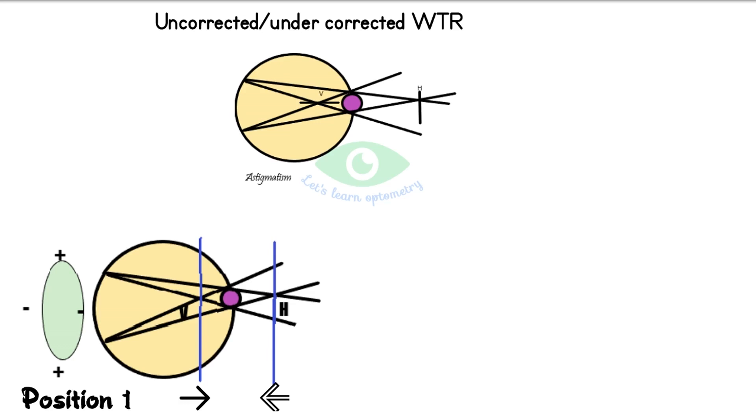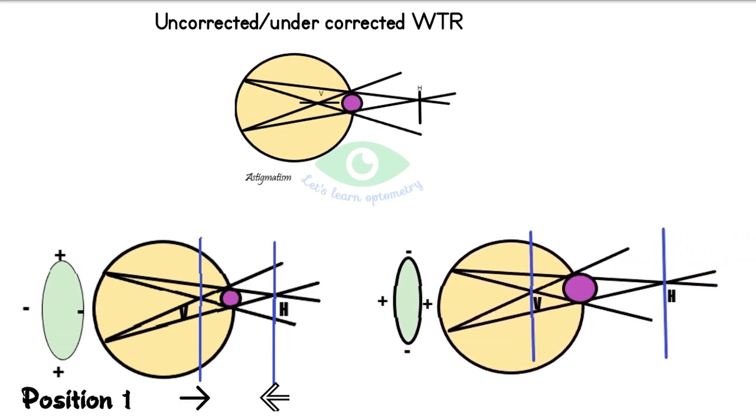And the interval of Sturm decreases from their initial position. Now when we flip the JCC with its minus axis at 90 degrees, each focal line will move away from the retina. Now the interval of Sturm increases.